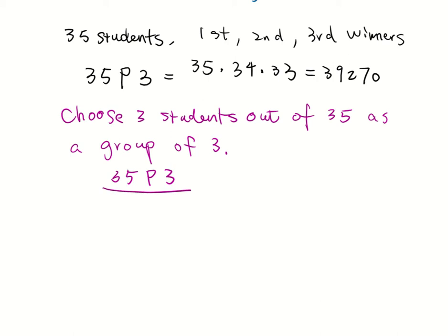We have to divide this by the cases that we overcounted, which is putting the 3 numbers in order, which is 3 factorial cases. And to calculate this, we have 35 times 34 times 33 divided by 3 times 2 times 1.